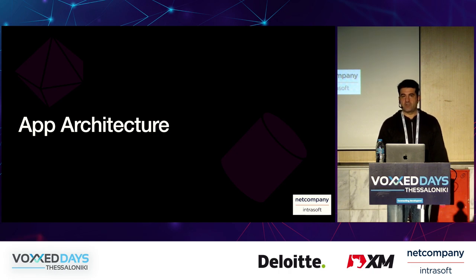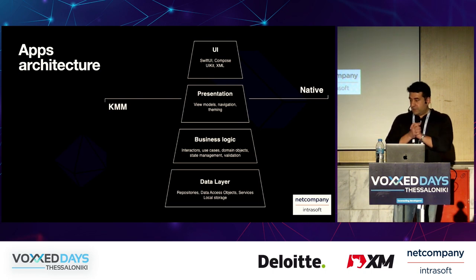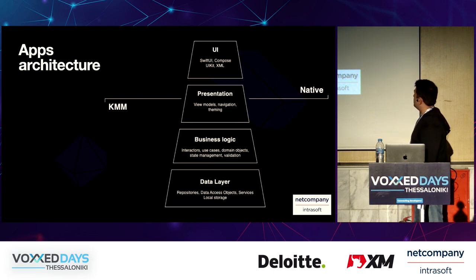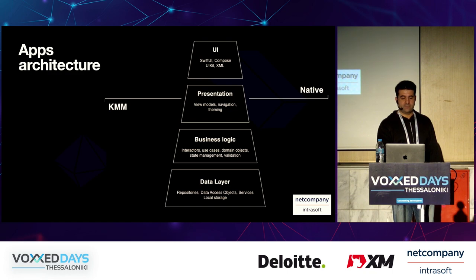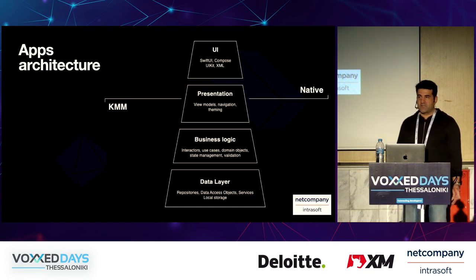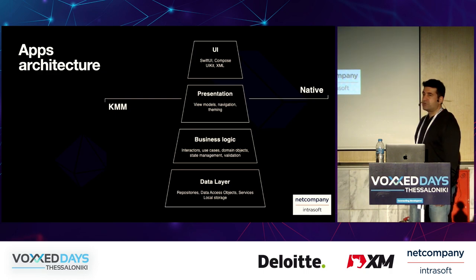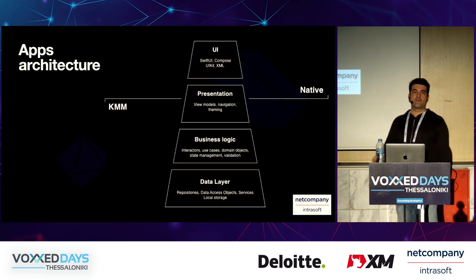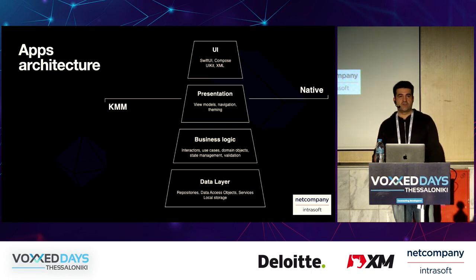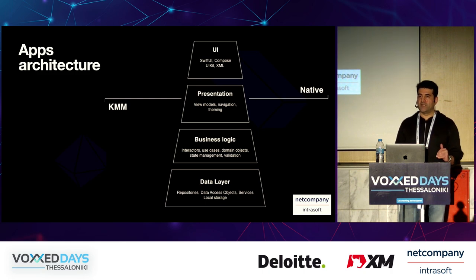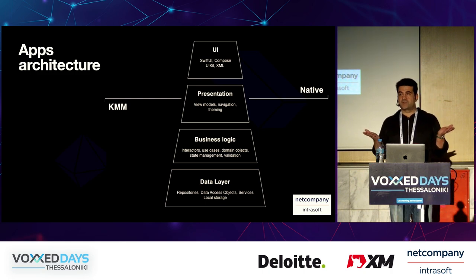Let's talk about our application architecture. We have a pyramid. At the very bottom is the data layer, where our repositories live — acting as an abstraction for data storage. DTOs live there as well, which are the objects in transit and usually the output of your repository. Services, third-party SDKs, remote services, local storage, and secure storage all live here. This layer is fully KMM with no native code, and it knows nothing about what's higher up in the pyramid.